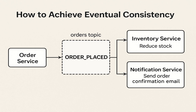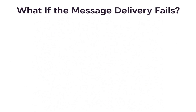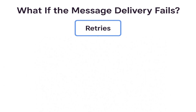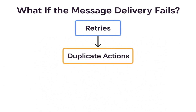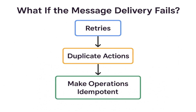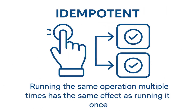Now, what if the message delivery itself fails? In that case, we can opt for retries. But using retries can lead to another problem: duplicate actions. To handle that, all operations must be idempotent. Idempotent means if we run the same operation multiple times, it will have the same effect as running it only once.